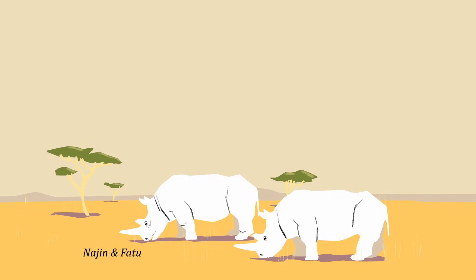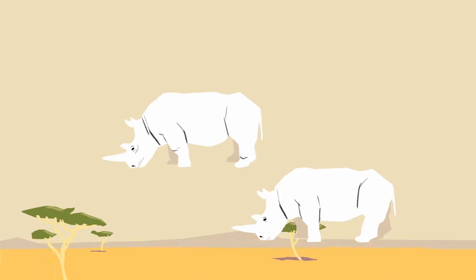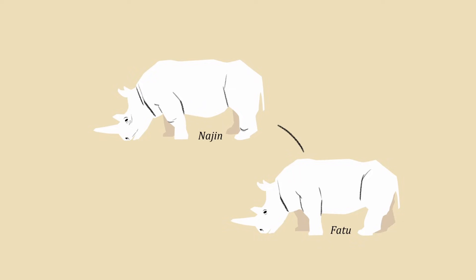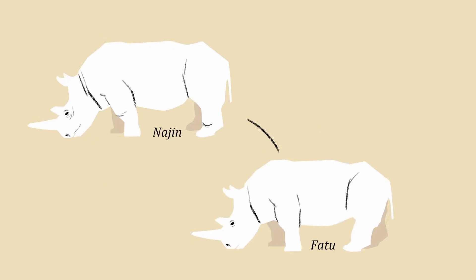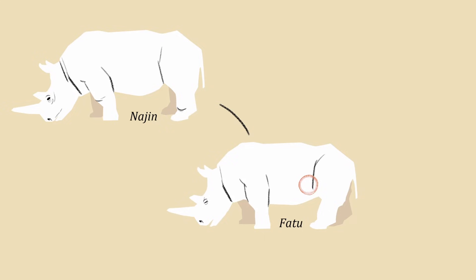In 2014, conservationists discovered that neither can have a calf. Though Najin gave birth to Fatu, she now has weak hind legs, which could harm her health if she became pregnant again. Fatu, meanwhile, has a degenerated uterine lining.